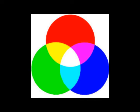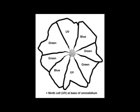Of the nine cells in each ommatidium, three are sensitive to light in the ultraviolet range, two to light in the blue range, and four to light in the green range. The combination of different signals from the retinular cells allows the bee to sense the colour of the light entering that ommatidium.